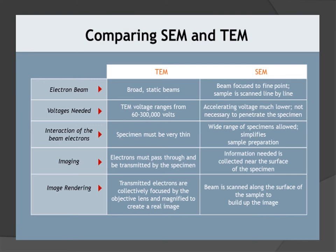In terms of imaging: for transmission electron microscopy, electrons must pass through and be transmitted by the specimen. In the SEM, information is collected near the surface. For image rendering, transmitted electrons are collectively focused by the objective lens to create a real image in TEM, whereas in the SEM the beam is scanned along the surface of the sample to build up an image.